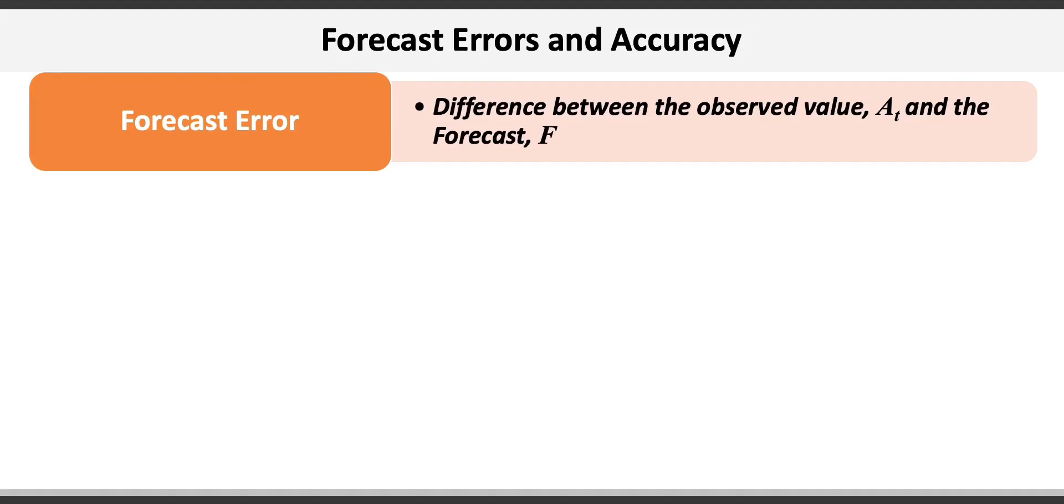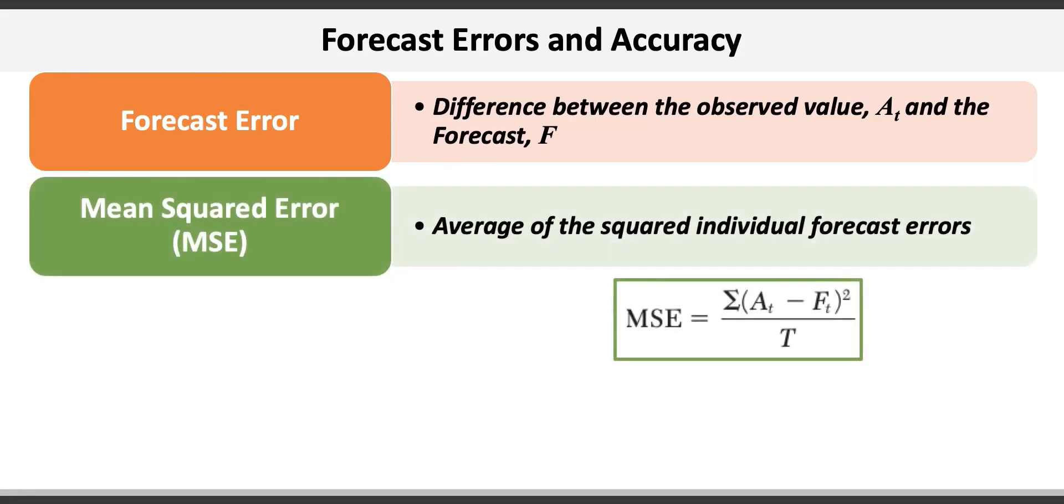In OM, we employ three different types of forecast errors. First, there is the mean squared error or MSE, which is calculated by squaring the individual forecast errors and then averaging them over all the t periods of data in the time series. Squaring helps highlight the magnitude of errors between observed and forecast values and helps to compare different models.